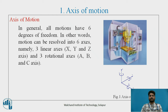As we can see, there are 3 axes X, Y, Z, and those 3 axes can be rotational also. Those rotational axes are denoted as A, B, and C. So in total, there are 6 degrees of freedom for axis of motion.